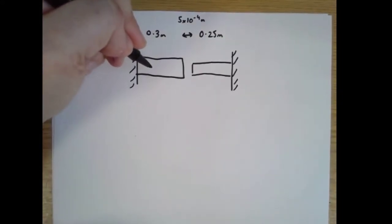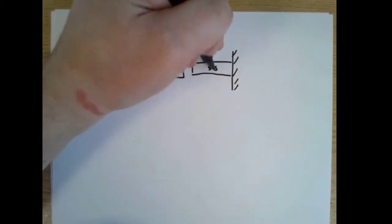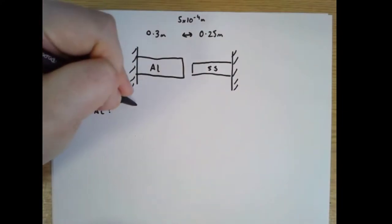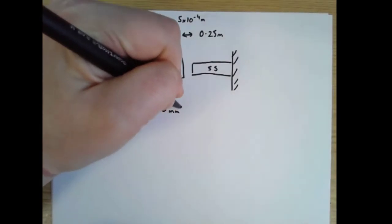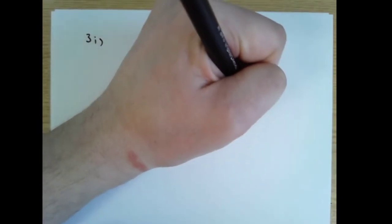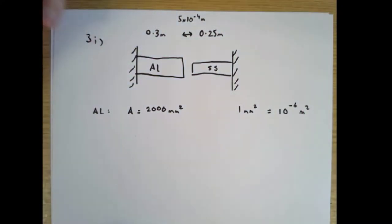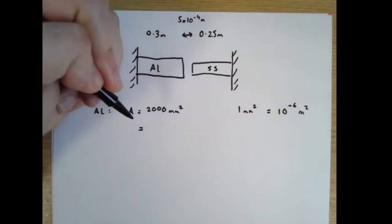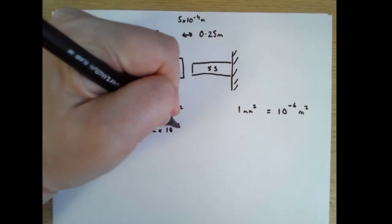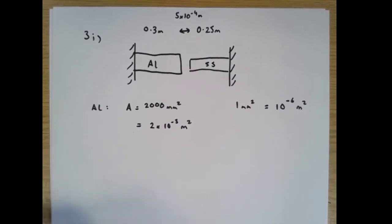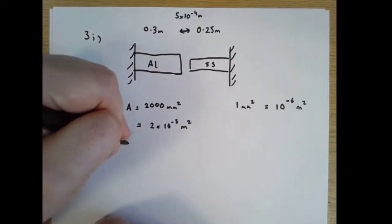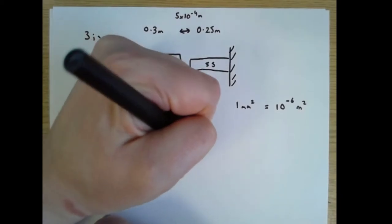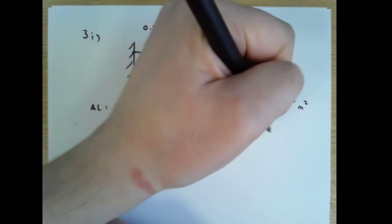This is aluminium and this is stainless steel. For the aluminium, we know the area equals 2,000 square millimetres. One square millimetre is 10 to the minus 6 square metres — a millimetre is 10 to the minus 3 metres, and you square everything, so you get 10 to the minus 6. So this equals 2 times 10 to the minus 3 square metres. We've also got Young's modulus is 75 gigapascals.